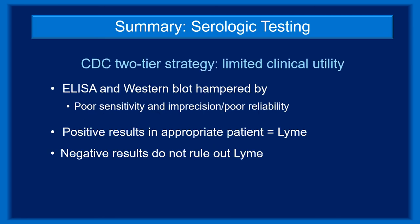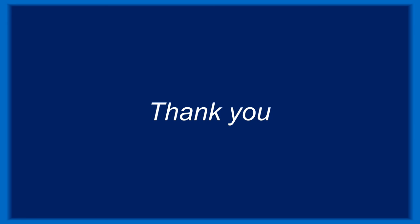In summary, serologic testing for Lyme disease is hampered by imprecision and relatively poor sensitivity of the available ELISAs and Western blots. Although the high specificity of the CDC two-tier strategy works well for epidemiologic purposes, the testing sequence further reduces sensitivity, thereby limiting its clinical utility. That said, positive results in untreated patients with symptoms of Lyme disease confirm the clinical diagnosis — it would be a mistake to label such results as false positives. Because ELISAs and CDC Western blot interpretation criteria are insensitive, negative results on two-tier testing do not rule out Lyme disease. Until reliable direct tests become available, using different Western blot interpretation criteria may improve the clinical sensitivity of this lab strategy. Thank you for participating in this CME activity on serologic testing in Lyme disease.